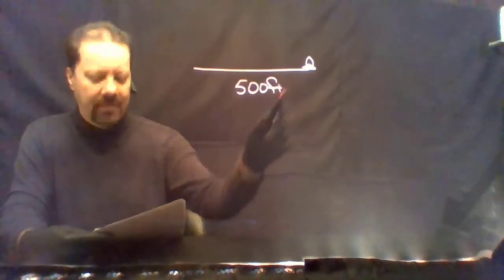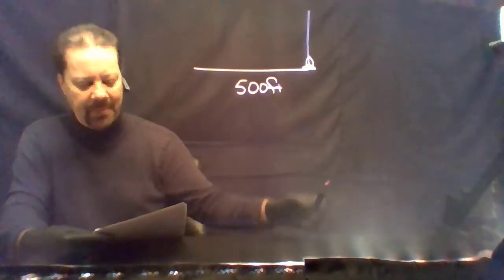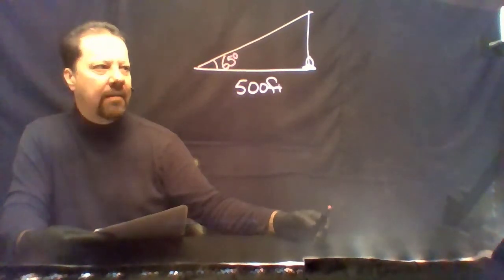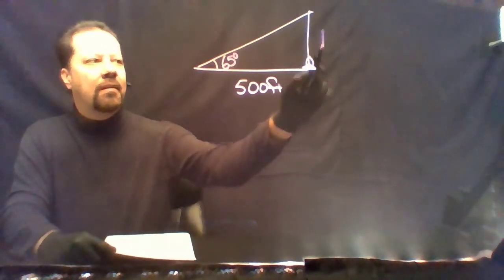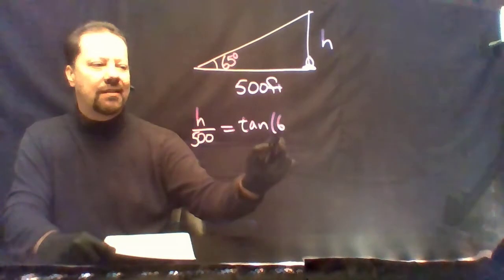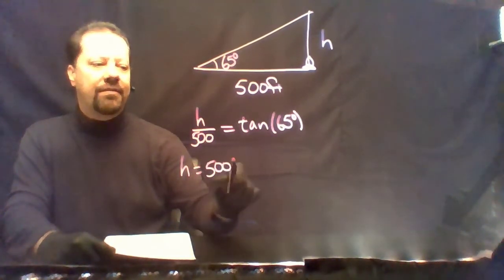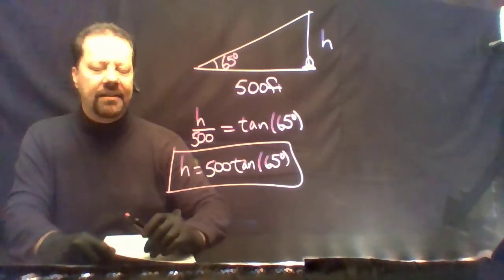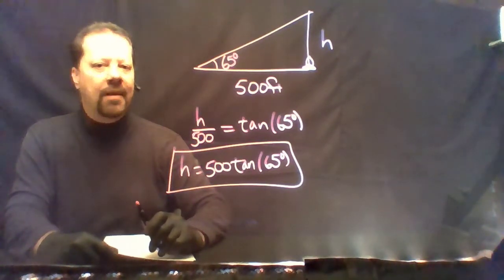The next problem is the famous rocket problem. A model rocket is launched straight up — ignore the engine type, that's a red herring. You stand 500 feet away and observe that when the rocket reaches its maximum altitude, it makes an angle of 65 degrees with the ground. Part A: calculate how high the rocket went. h/500 = tan(θ), so h = 500·tan(65°). No calculator — box it and leave it.